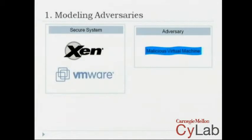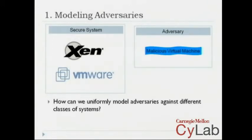A third example would be something like a hypervisor like Xen or VMware, which runs below the operating system. In that case, you might have honest programs controlling certain virtual machines, but certain other virtual machines might be controlled by the adversary. Before we start talking about compositional security in a general form, one question we have to address is: how can we uniformly model adversaries against these different classes of systems?